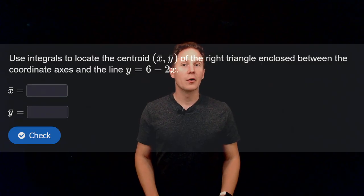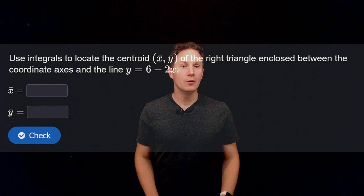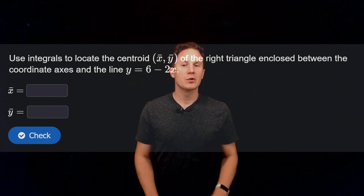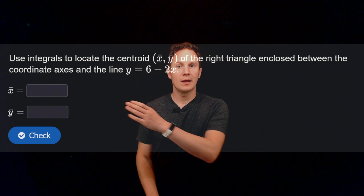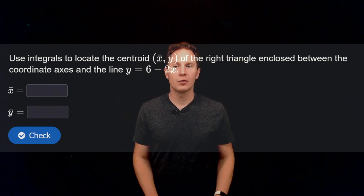Use integrals to locate the centroid of the right triangle enclosed between the coordinate axes and the line with the equation y equals 6 minus 2x. Pause the video, calculate the coordinates of the centroid, and input your answers in the boxes.